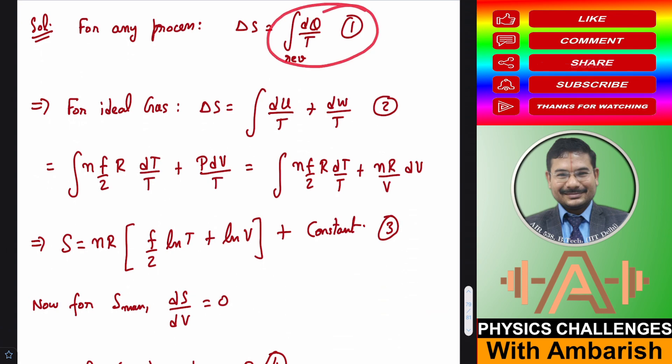So remember that even if the process is irreversible, entropy change always has to be found by considering a reversible process between the initial state and the final state. Even if the process is irreversible, this is important. I will try to take it up in some other video.